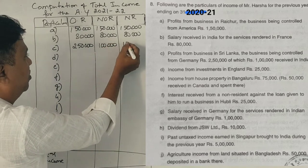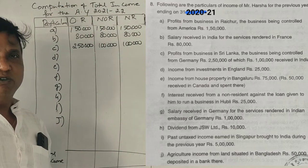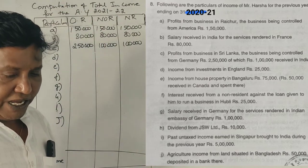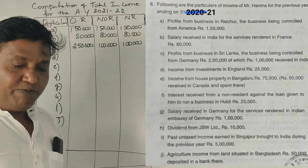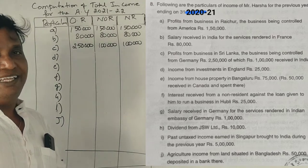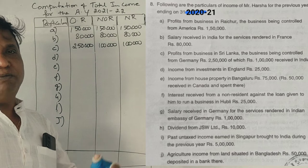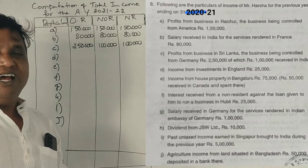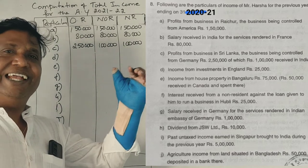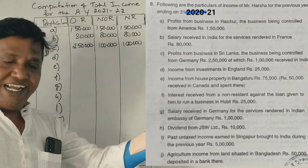For ordinary resident and non-resident status — 1,000,000 and 1,000,000 are taxable. Next point: income from investments in England. The investment is in England, earned in England.